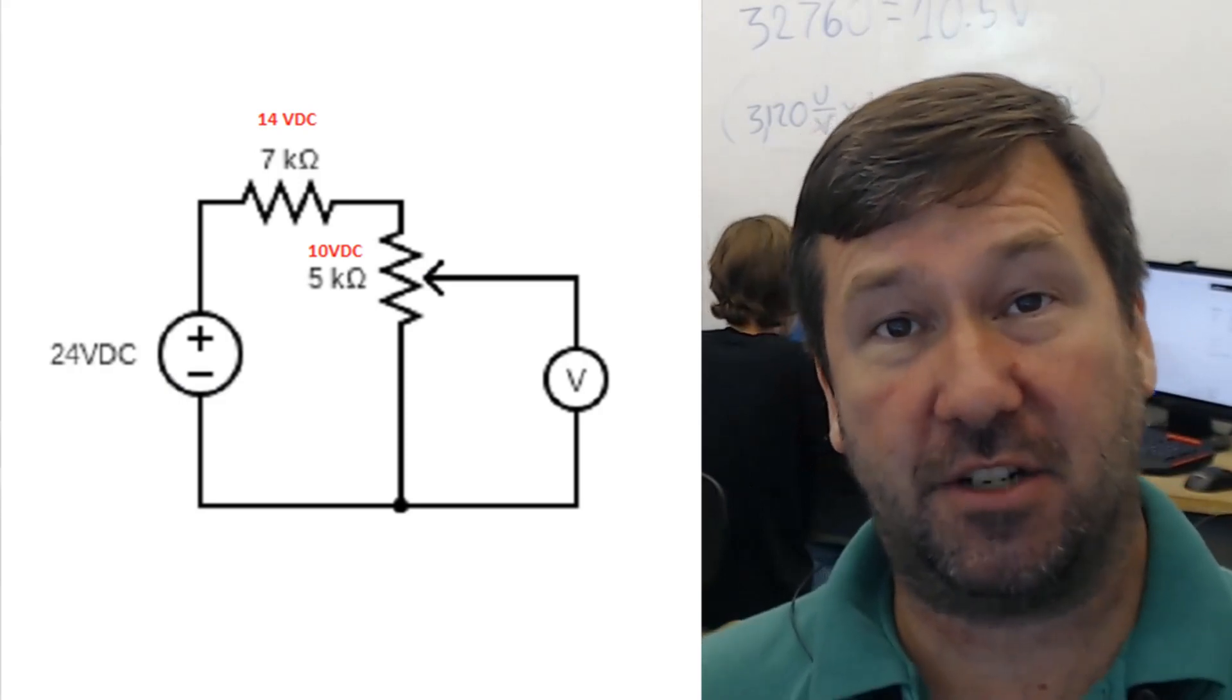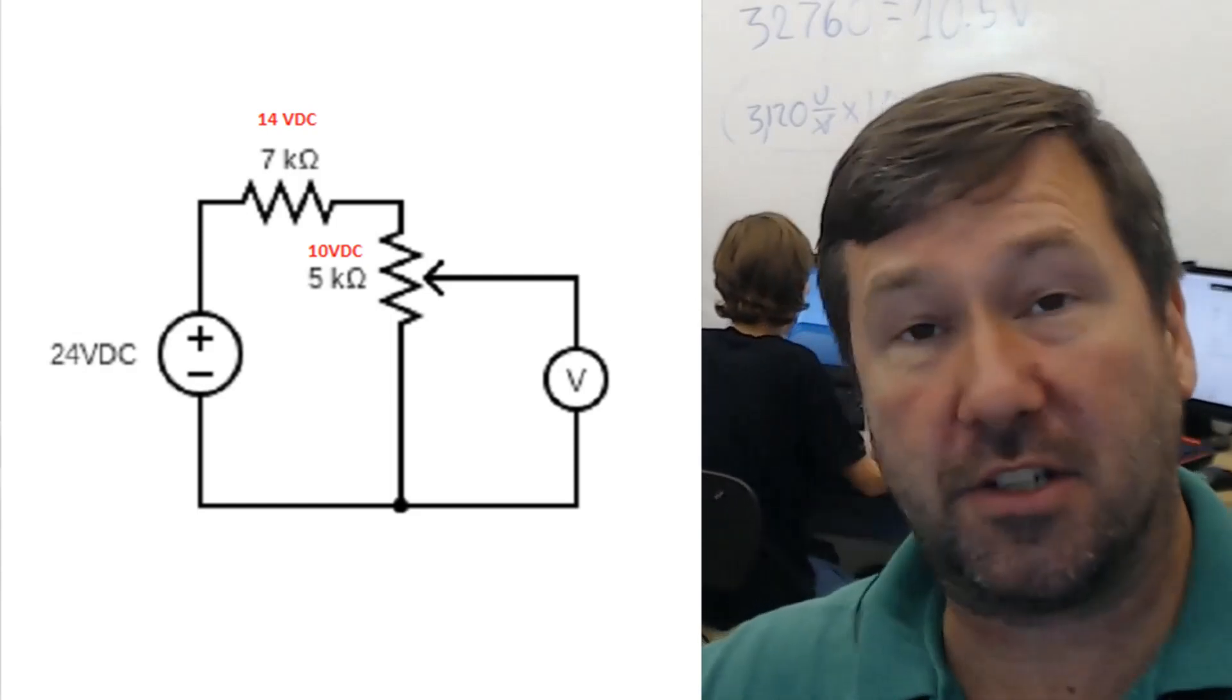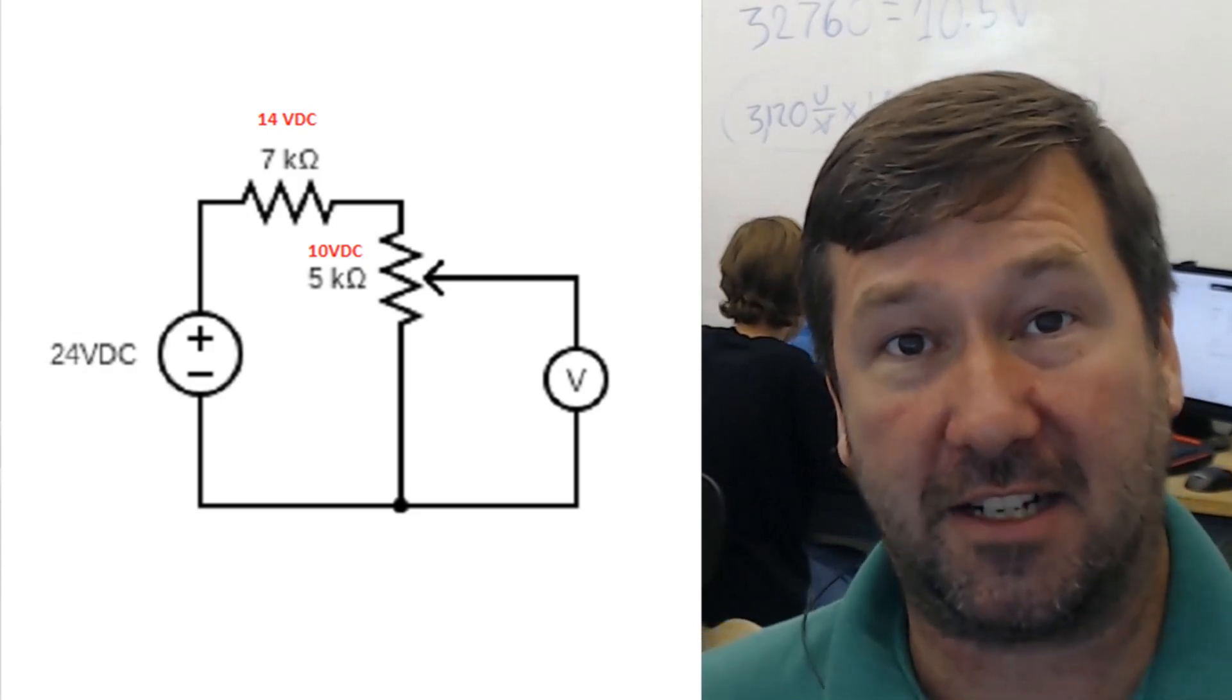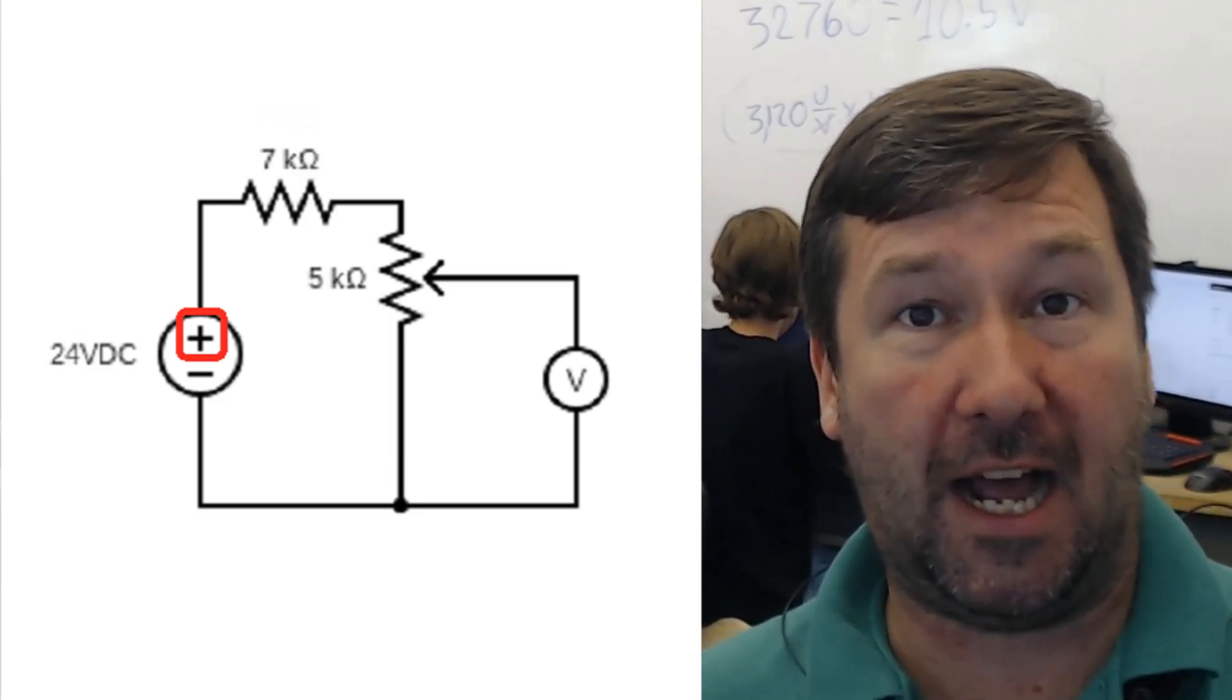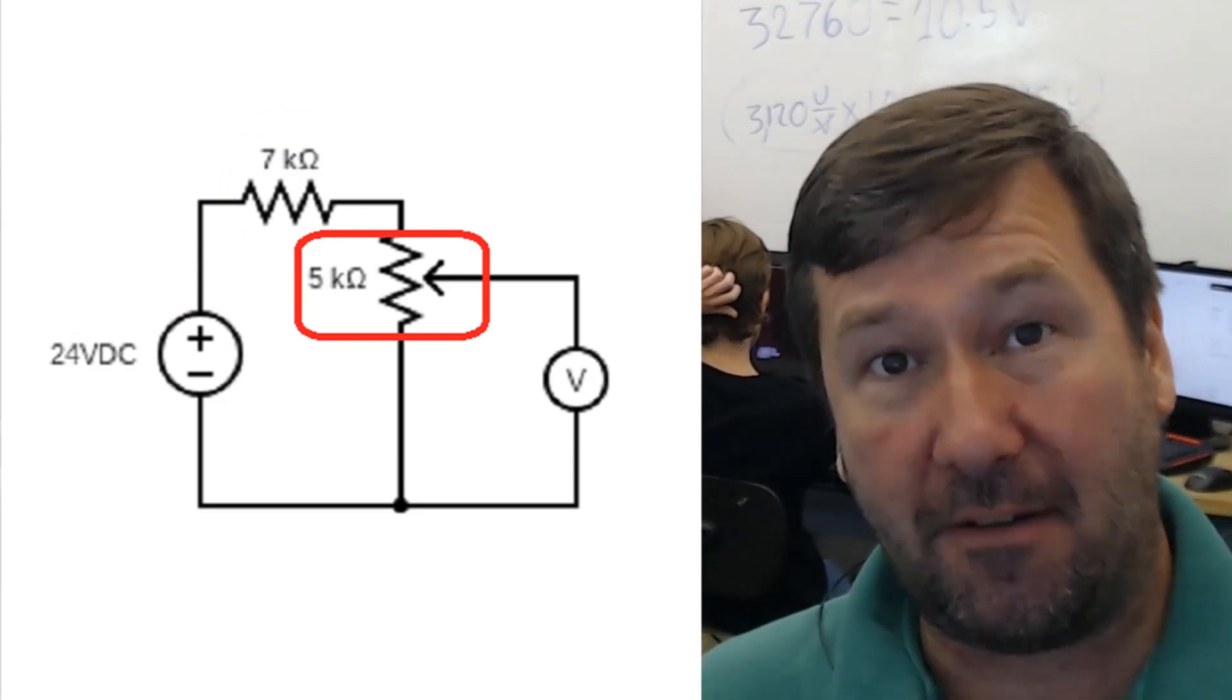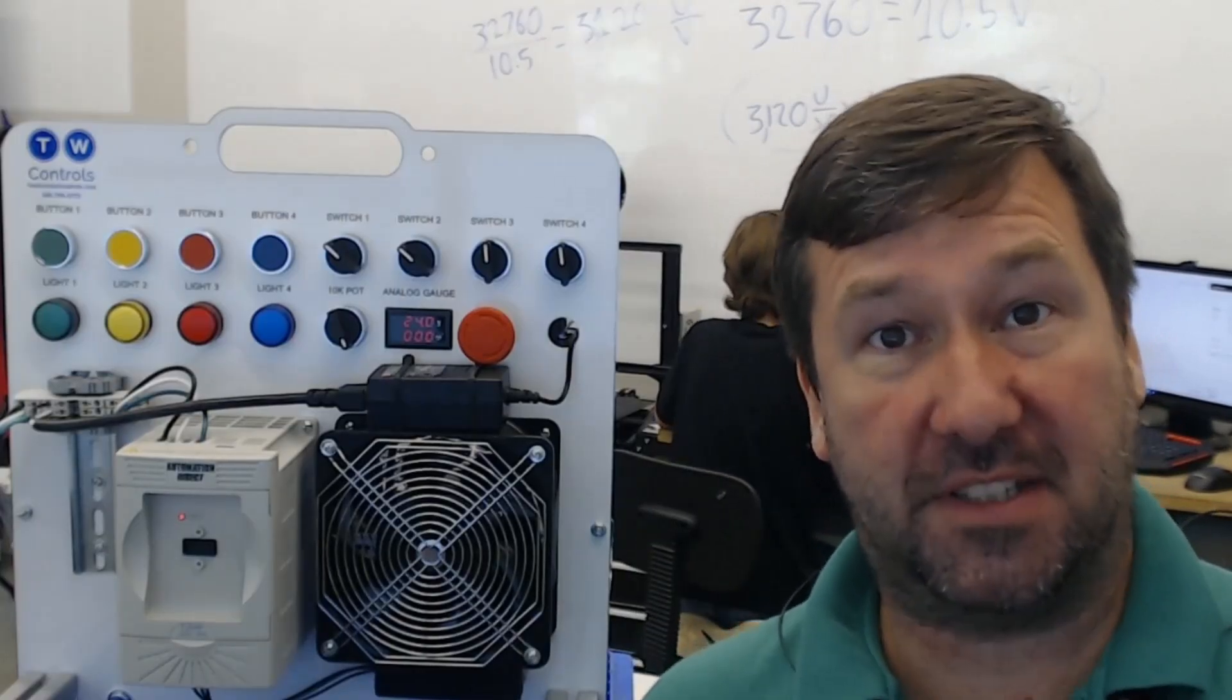And this week's automation question, we used a 7k resistor in series with our potentiometer to drop the voltage across the potentiometer to the 10 volt, which is typically what an analog voltage signal is. So these resistors were in series, so you had the plus 24 volt of our power supply, the 7k resistor, then the 5k potentiometer, and then it went back around to the common of the power supply. So how do we come up with this 7k value?